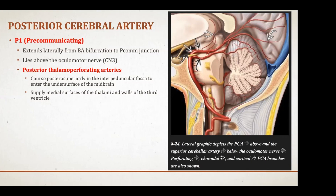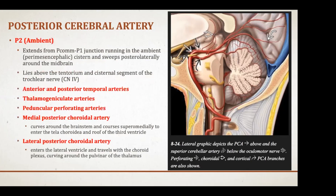The P2 or ambient segment extends from the P1-PCOM junction and runs in the ambient or perimesencephalic cistern, going posterolaterally around the midbrain. This is the part of the posterior cerebral artery that wraps around the midbrain, lying right above the tentorium and the cisternal segment of the fourth nerve.